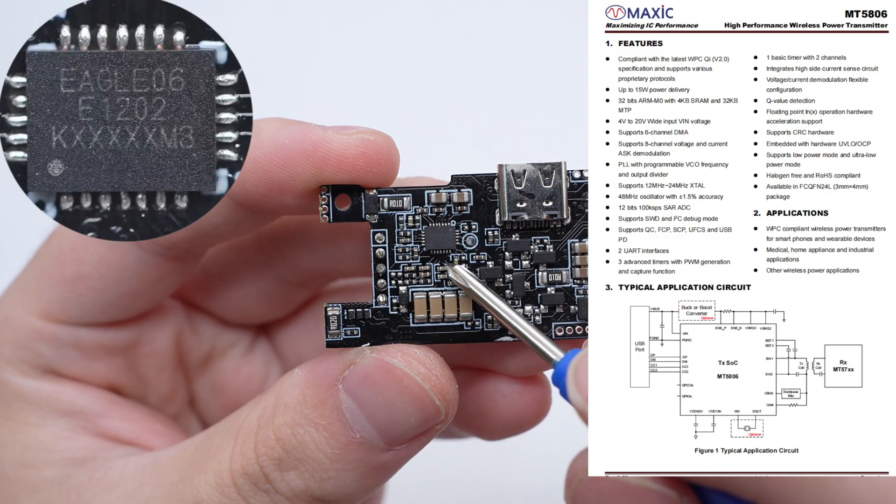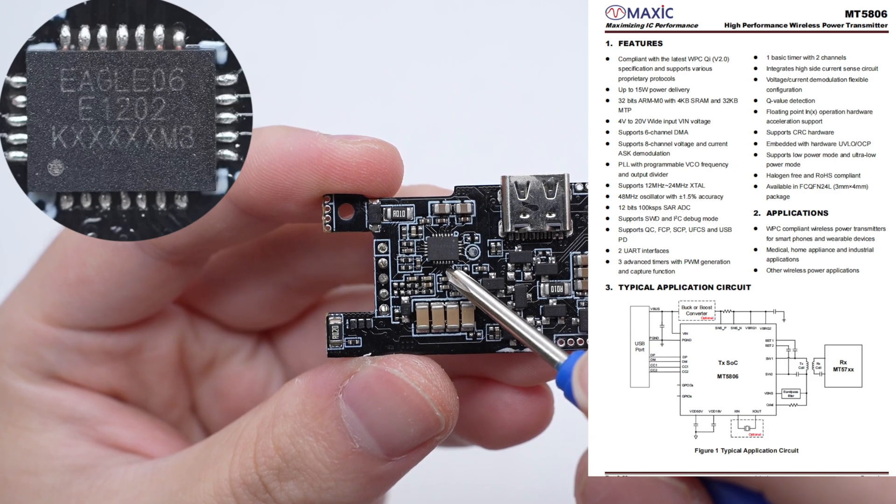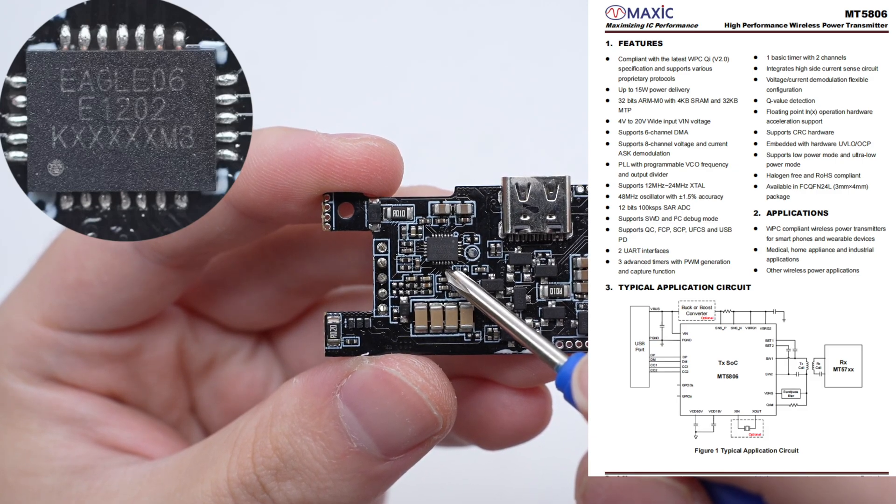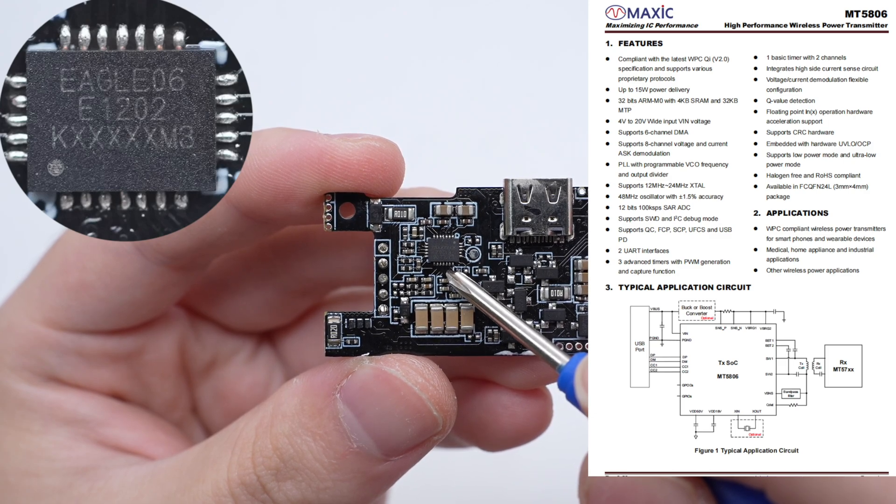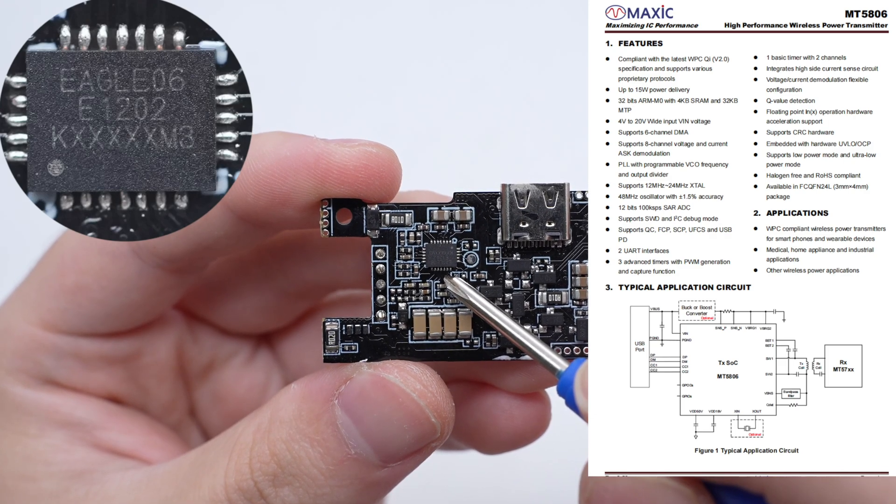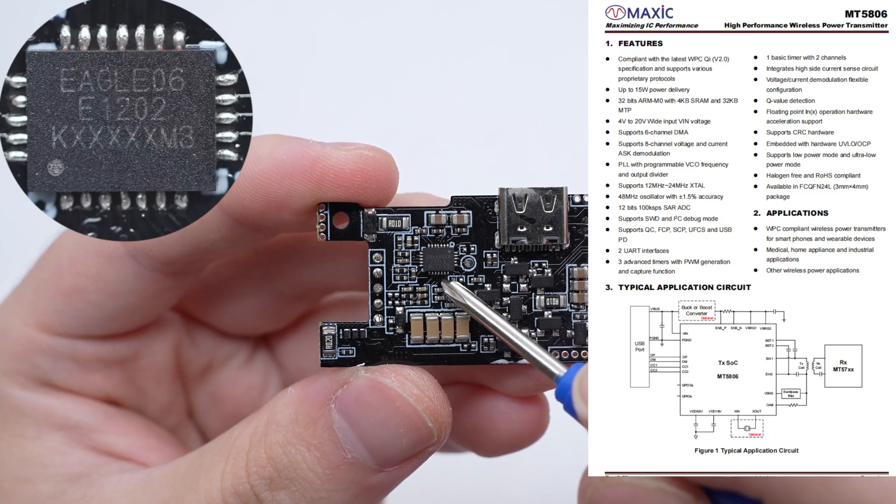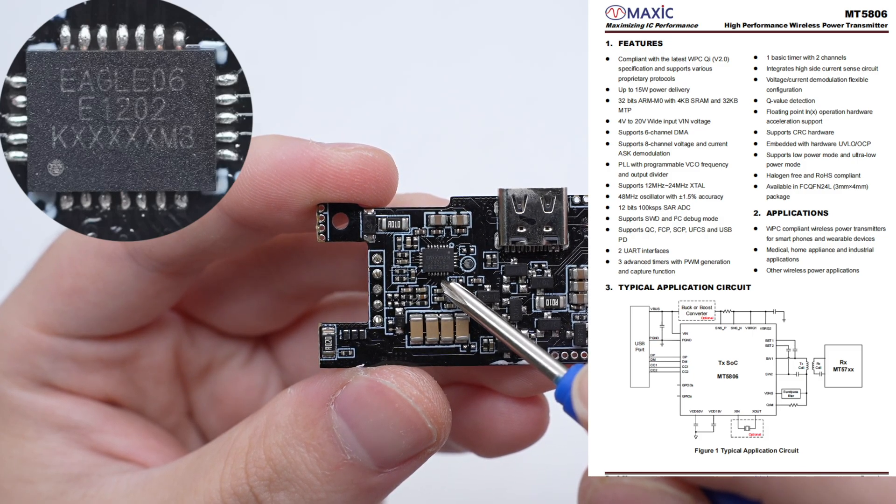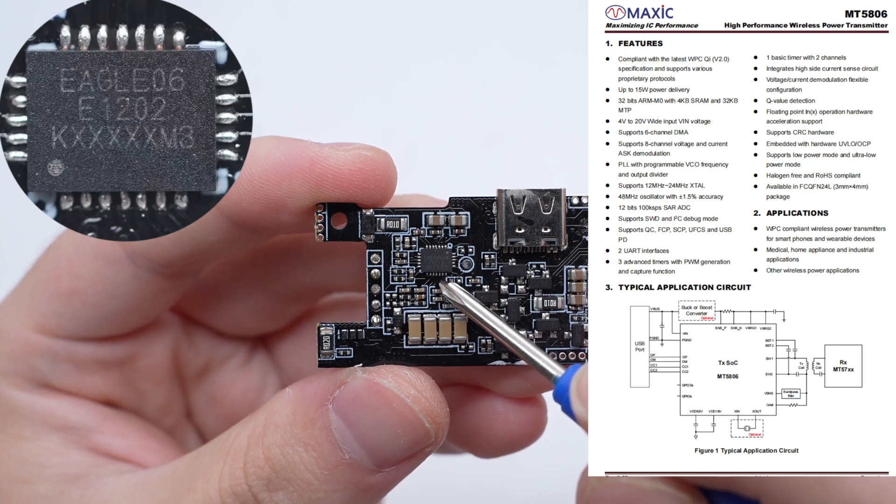The wireless charging chip is from MACC and adopts a QFN24L package. It is a highly integrated, high-performance wireless charging transmitter chip based on magnetic induction. It supports WPC Qi wireless charging protocol and multiple wired fast charging protocols such as PD, UFC, FCP, SCP, QC, etc.